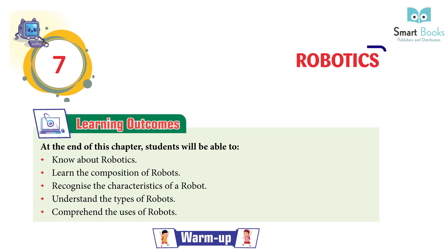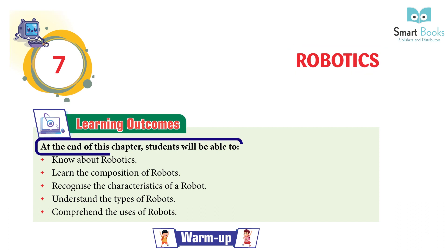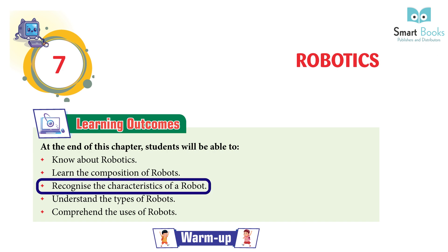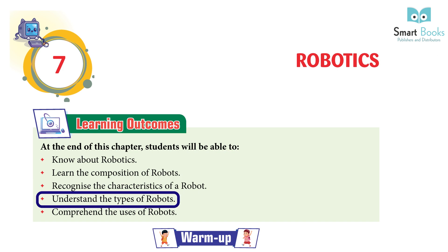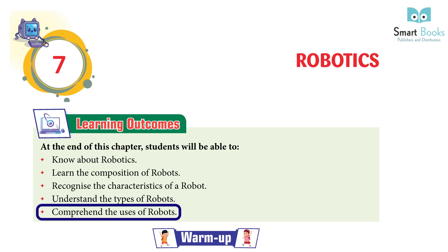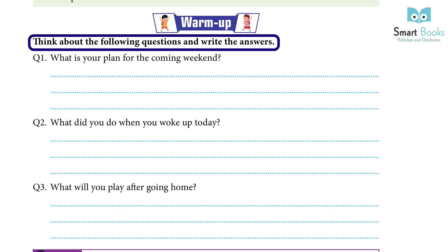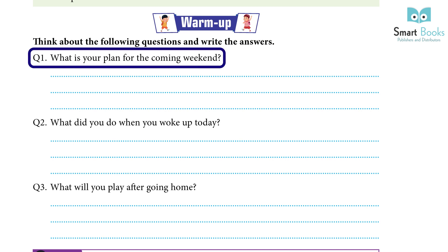Chapter 7: Robotics. Learning Outcomes. At the end of this chapter, students will be able to: know about robotics, learn the composition of robots, recognize the characteristics of a robot, understand the types of robots, and comprehend the uses of robots.